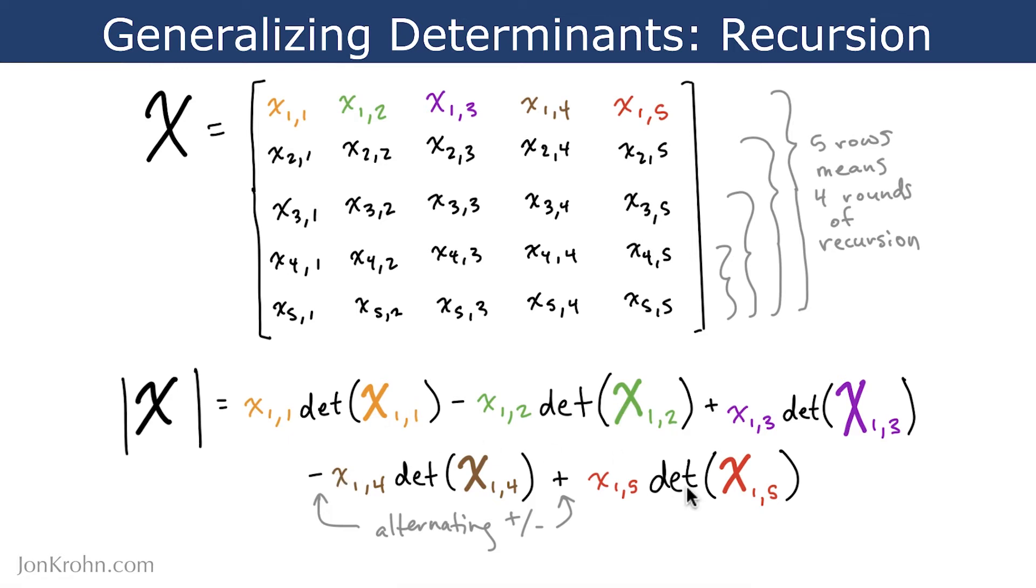So if we had a 7x7 matrix that we were calculating the determinant for, then we would have another term that we subtract, and then another term after that that we add. Alright, so that's at a high level. So let's tackle what we do to recursively generalize the calculation of determinants to matrices that are larger than 2x2.